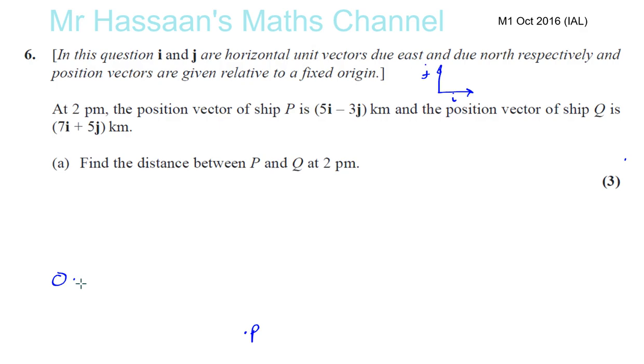We can write that as a column vector, much easier to deal with them as column vectors. So what I would do is say OP is 5 and minus 3. The top number is for i, the bottom number is for j. Horizontal, vertical.